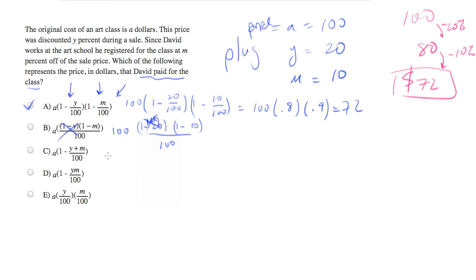And let's do this one. 100 times (1 minus y plus m) is 10 plus 20 over 100. This has potential. Let's do 100.